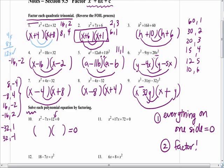Think factors of positive 12 that add up to negative 7. Tate, what did you get? Negative 3 and negative 4. Now we have to do zero product property — take each of the factors and set them equal to zero. Kevin, what are your two answers? X equals 3 and x equals 4.